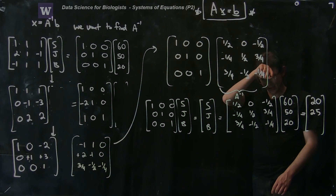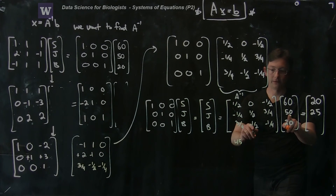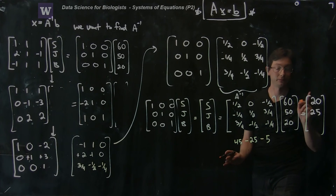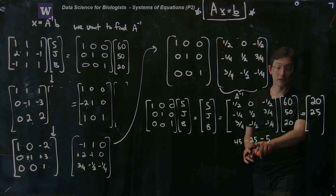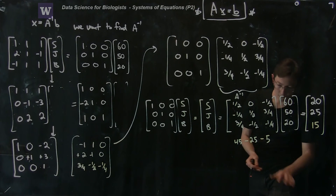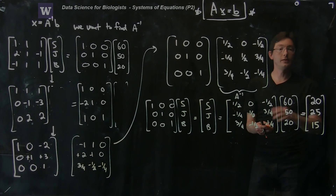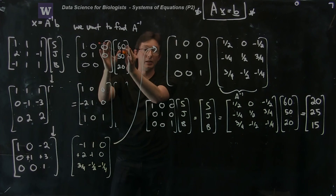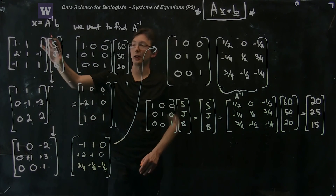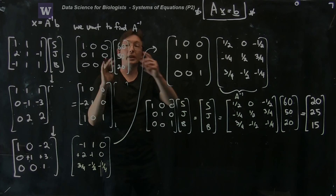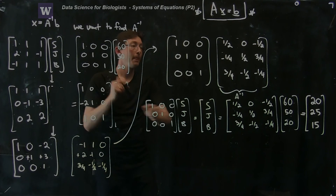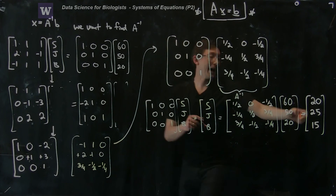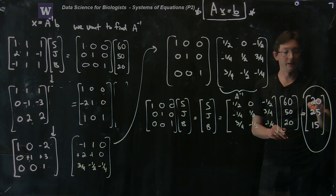The last equation: three-quarters of 60 is 45, minus one-half of 50 is minus 25, and minus one-quarter of 20 is minus 5. So 45 minus 25 is 20, minus another 5 is 15. Bob is 15. We confirmed that writing A times X equals identity times B, performing row operations to turn A into the identity while doing the same to the identity matrix, gives us A inverse. Taking A inverse times B yields the solution X.